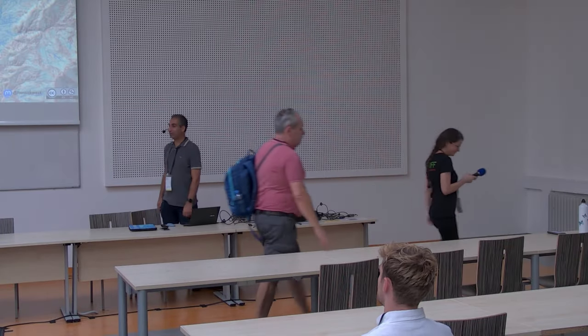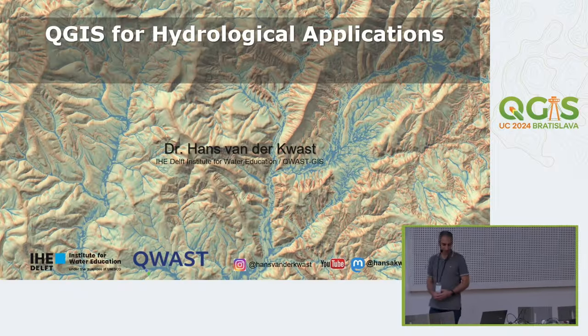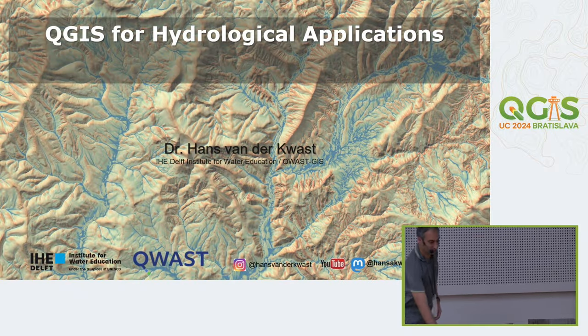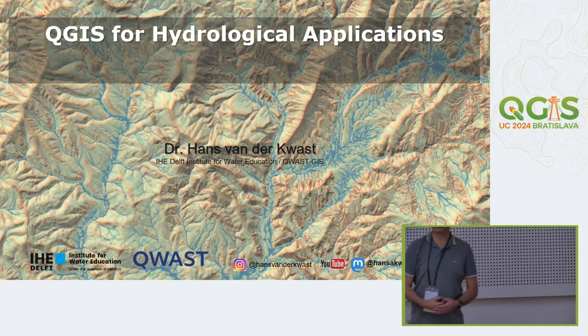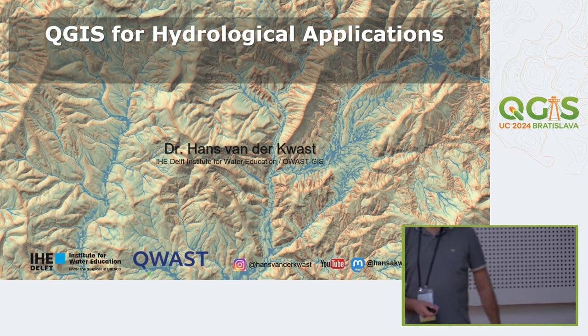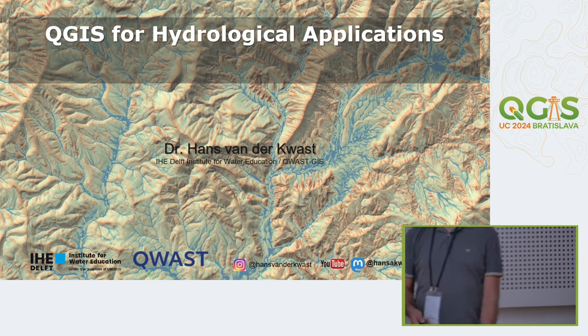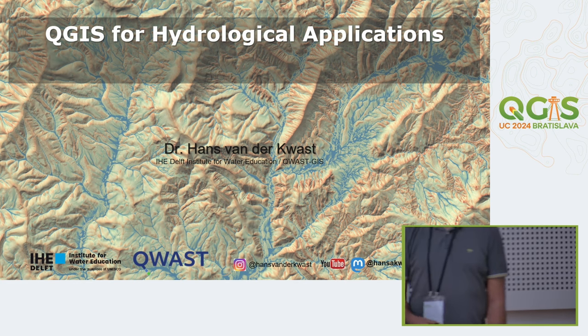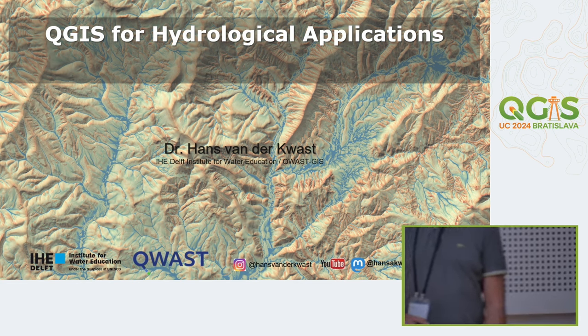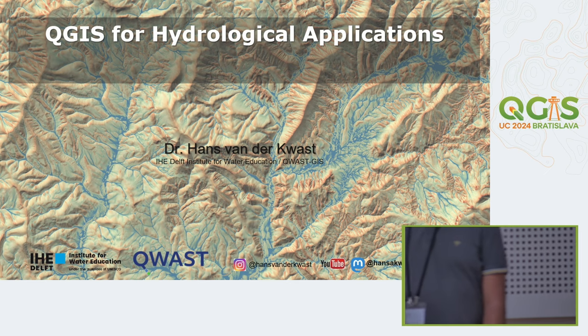The original title was different, but it's the same presentation. I just forgot to change the title. It's about the state of the PC Raster Tools plugin, but I'm going to give you a bit more context about doing hydrology in QGIS using the different tools that are available and how PC Raster fits in that ecosystem.